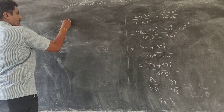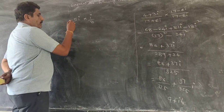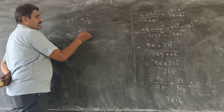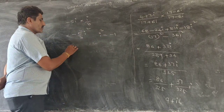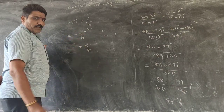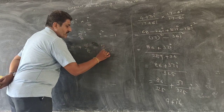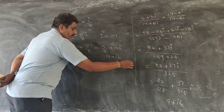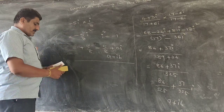Suppose minus 5i into (i by 8). This is a basic question. Minus 5 by 8, and i into i is i squared. But we know i squared is equal to minus 1, so it becomes plus 5 by 8. In this question if you observe carefully, there is no imaginary part, so we can write it as 5 by 8 plus 0i, which is in the form of A plus iB.